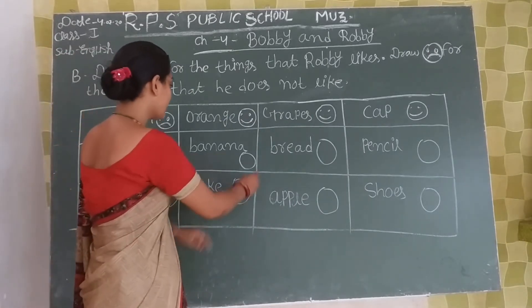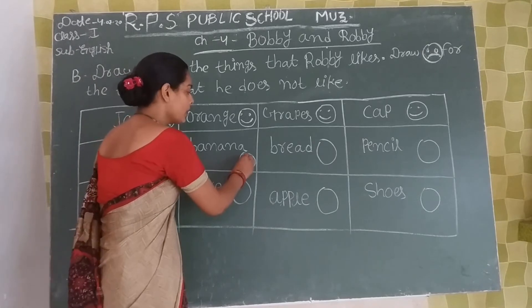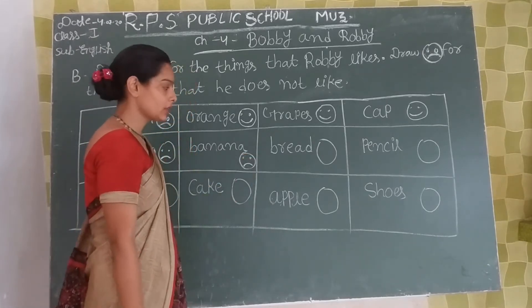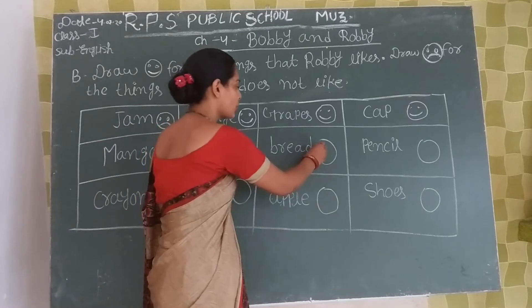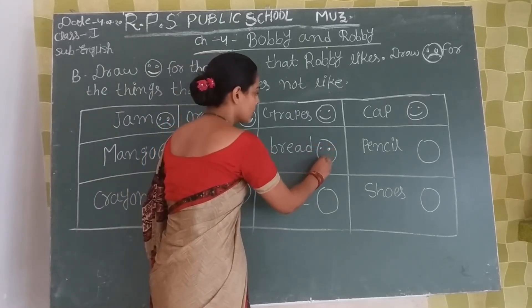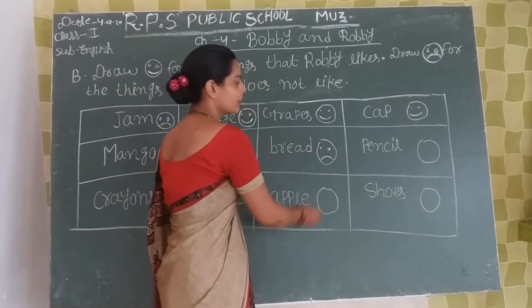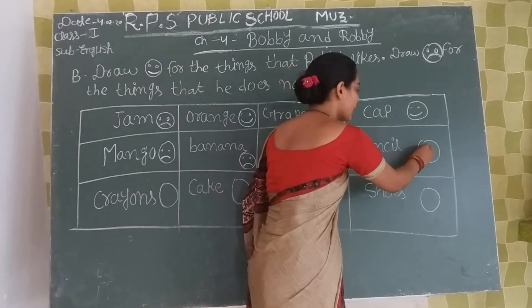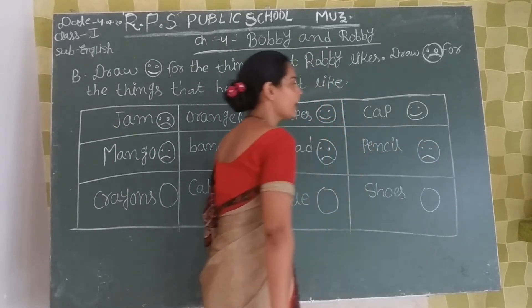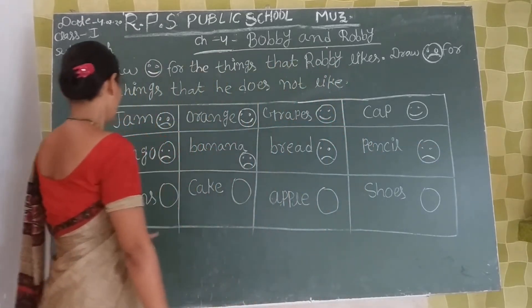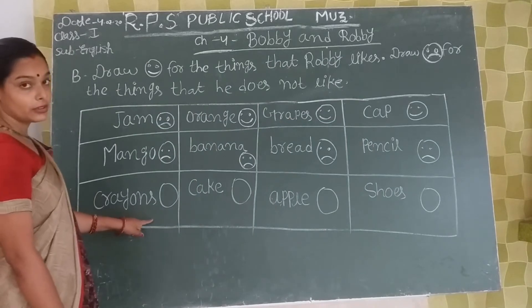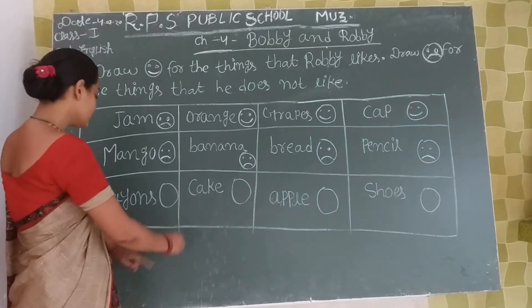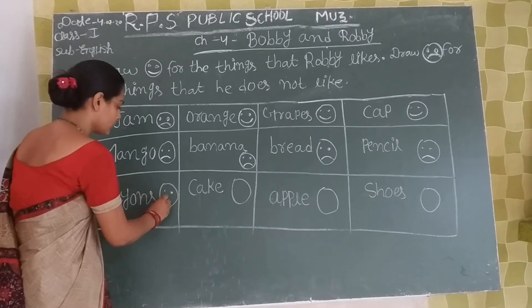Banana — Robbie doesn't like banana. Okay. Grape — Robbie doesn't like grape. Pencil — Robbie doesn't like it. Okay, let's move to the next. Crayons — Robbie likes crayons.